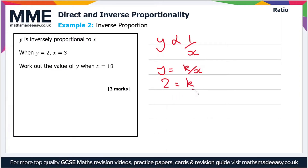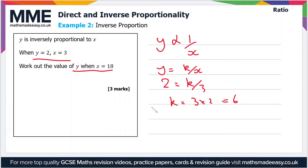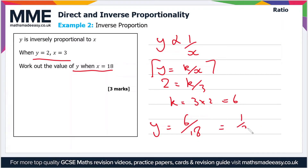Substituting in the given values: 2 equals k over 3. Solving for k, we multiply both sides by 3, so k equals 3 times 2, which is 6. Now we work out the value of y when x equals 18 by substituting into the equation: y equals 6, which is k, divided by x, which is 18 — which cancels down to one third.